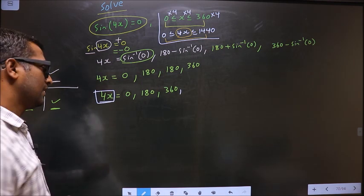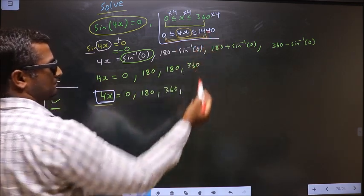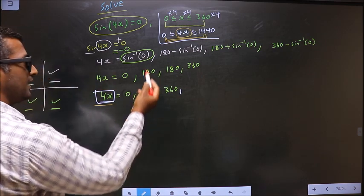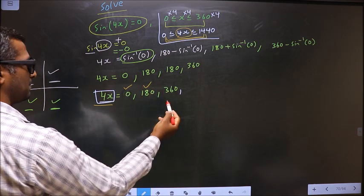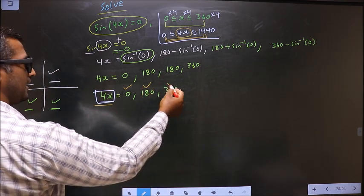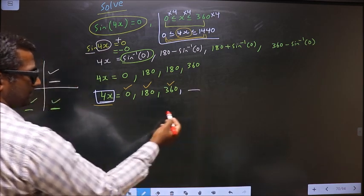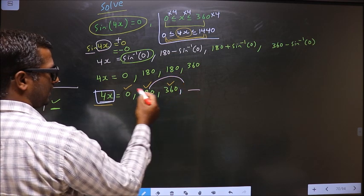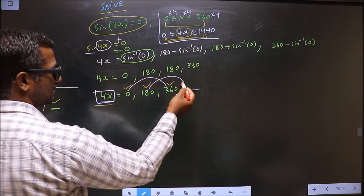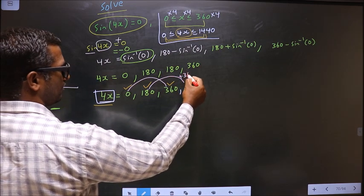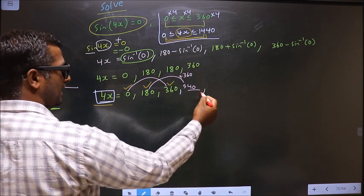We now write all values of 4x in the interval [0°, 1440°]. Does 0 lie in the interval? Yes — accept. Does 180 lie? Yes — accept. Does 360 lie? Yes — accept. To get another value, add 360 to 180: we get 540. Does 540 lie in the interval? Yes — accept it.